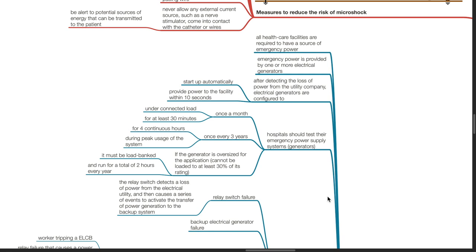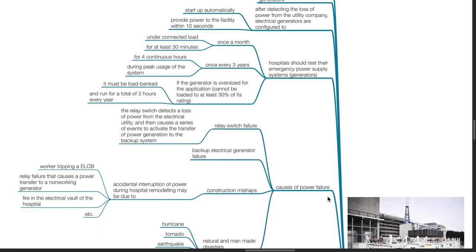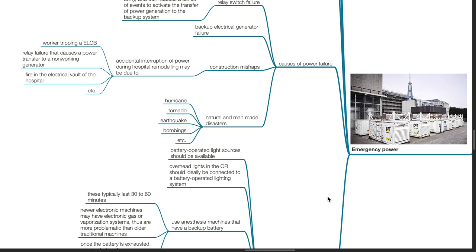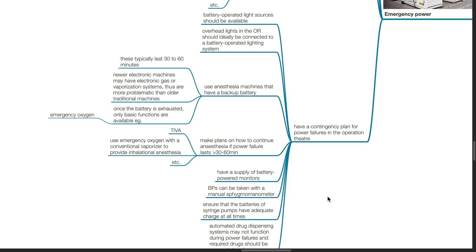Causes of power failure can be due to relay switch failure, backup electrical generator failure, construction mishaps, and natural and man-made disasters. Relay switch failure: The relay switch detects a loss of power from the electrical utility and then causes a series of events to activate the transfer of power generation to the backup system. Construction mishaps: Accidental interruption of power during hospital remodeling may be due to worker tripping an ELCB, relay failure that causes a power transfer to a non-working generator, fire in the electrical vault of the hospital, etc. Examples of disasters include hurricanes, tornadoes, earthquakes, and bombings.